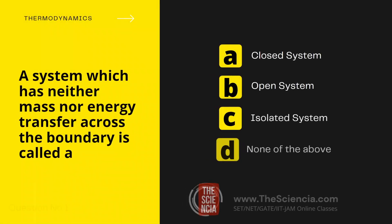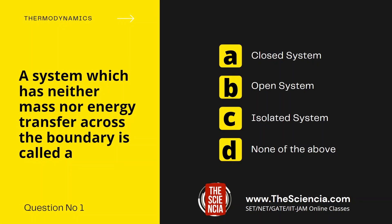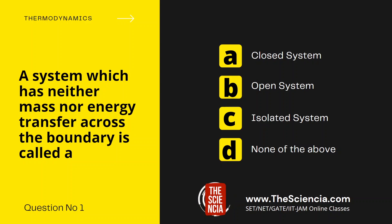Let's talk about thermodynamics. The first question is: a system which has neither mass nor energy transfer across the boundary is called — Option A, closed system. Option B, open system. Option C, isolated system.